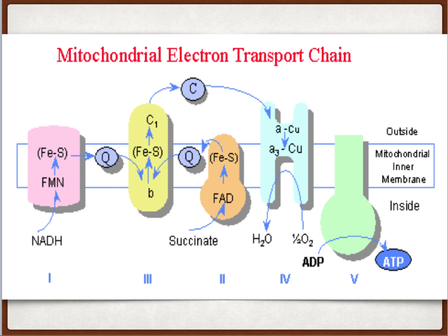The set of enzymes in the electron transport chain consists of complex 1, 2, 3, and 4, all present in the inner mitochondrial membrane. These electron transport molecules consist of water-soluble cytochrome C, lipid-soluble coenzyme Q, some protein-bound iron-sulfur clusters, and prosthetic groups which are FMN and FAD. Together they cause the transfer of electrons to the final acceptor, which is oxygen.